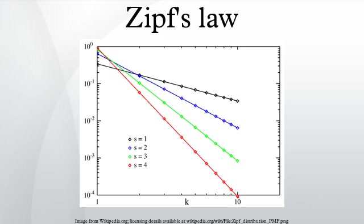Formally, let N be the number of elements, k be their rank, s be the value of the exponent characterizing the distribution.